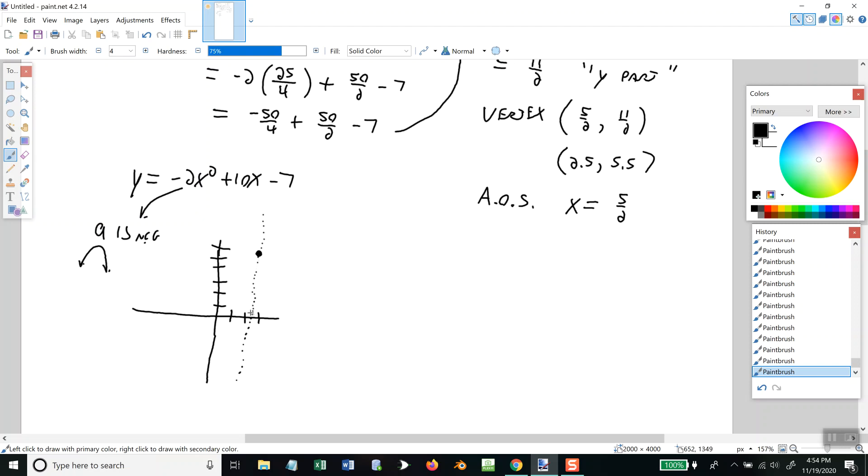Now, you want to pick an x value fairly close. You don't want to go too far away. But this might be too close. So, I'm going to choose 1. And I'm going to plug in x = 1. So, I get y is equal to -2(1)² + 10(1) - 7. 1² is 1 times -2 is -2. 10 times 1 is 10 minus 7. -2 to -7 is -9 + 10 is 1. So, assuming I didn't screw up on my basic math, I'd have (1,1) right here.